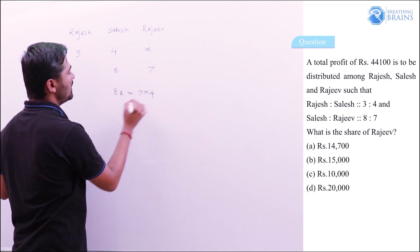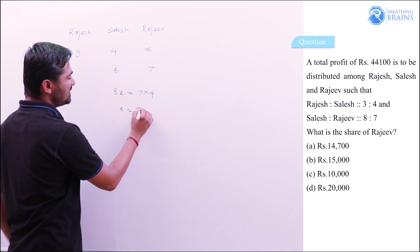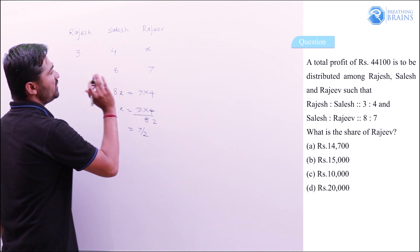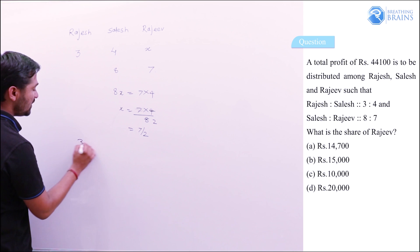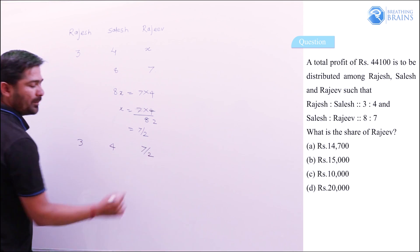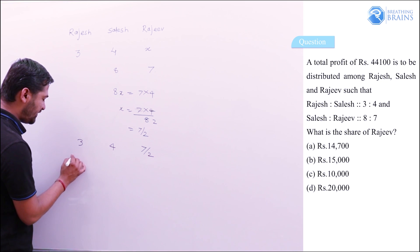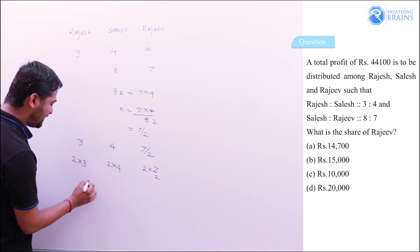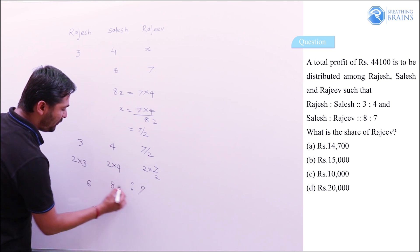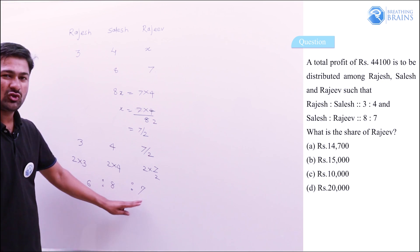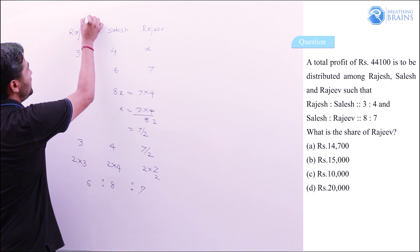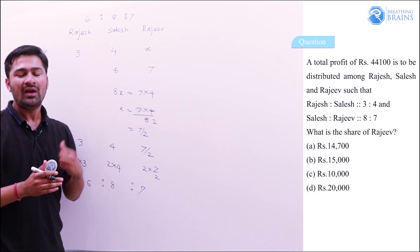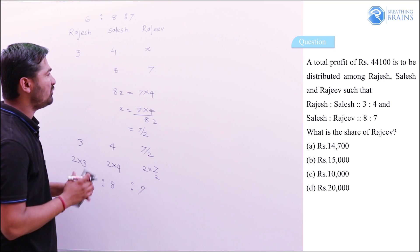With x = 7/2, the ratio becomes 3 : 4 : 7/2. To remove the fraction, multiply all terms by 2: the combined ratio is 6 : 8 : 7 for Rajesh : Salesh : Rajiv. Method 2 (shortcut): multiply diagonally — 3×8 = 24, cross gives 8×4 = 32, and vertical gives 4×7 = 28. Divide all by 4 to get 6 : 8 : 7.